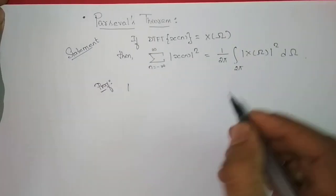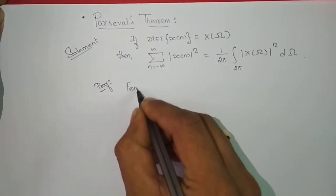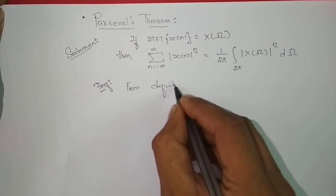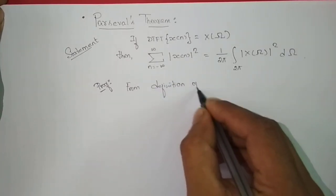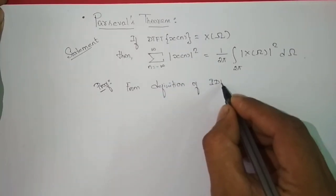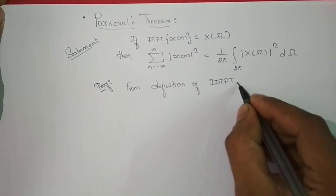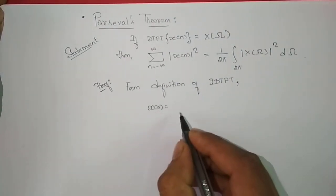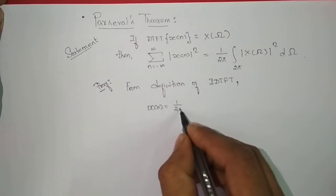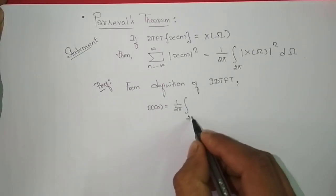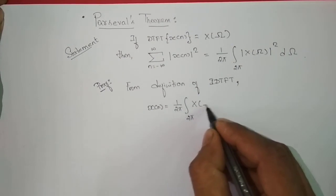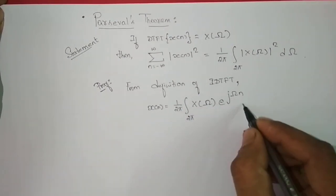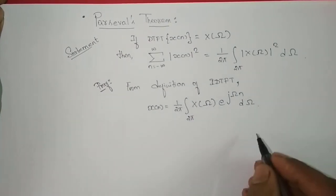Proof. We know from the definition of the IDTFT — that is, the inverse discrete time Fourier transform — that x(n) is given by 1 over 2π, integrating over one period of 2π, of X(ω) e^(jωn) dω.